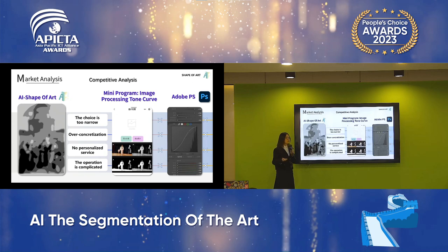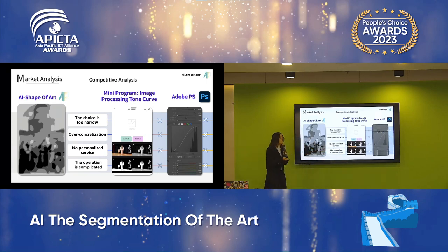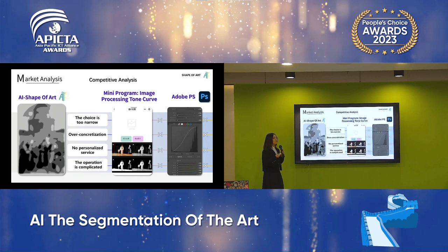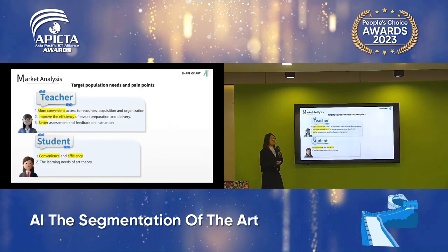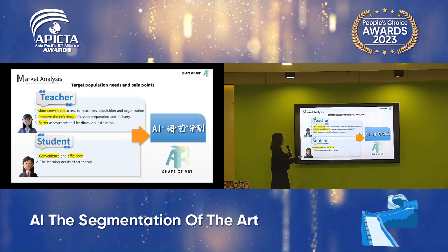Maybe someone will ask why we don't use other products. We found some competitive software like Adobe and a very similar program. One competitor can only give you three types and a fixed picture; another may give you an abundant functional area but it's a little difficult for beginners to use. So with Shape of Art, we can give you a more concise reference picture for more free and personal creative needs, providing mutual benefit and a win-win result for both parties.